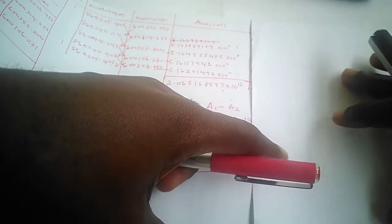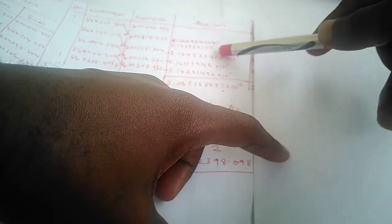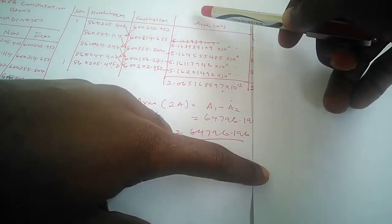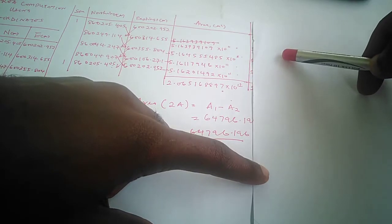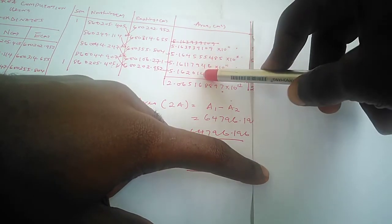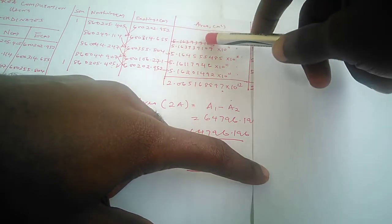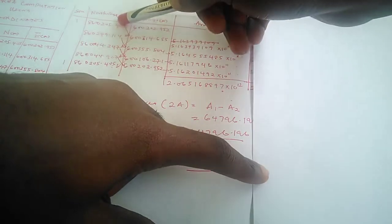Without wasting much of our time, we are going to proceed. I've actually computed the area—the partial area rather. There is a column here for area one and another column for area two. This column is for the partial area.